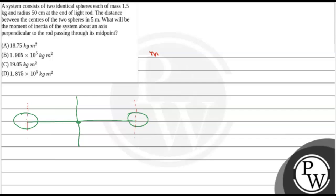Each sphere has mass m equals 1.5 kg and radius r equals 50 cm, which is 0.5 meter. So let's say this is sphere 1 and sphere 2. Both have the same mass and radius, so both will have the same moment of inertia about their center of mass.